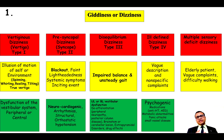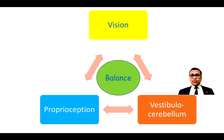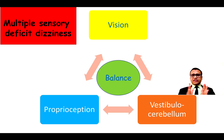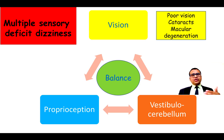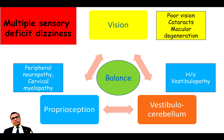Multiple sensory deficit dizziness is specifically seen in elderly patients who have vague complaints, difficulty walking, and multiple concurrent problems. Balance is controlled by three main sensory inputs: vision, proprioception, and vestibular input. In these patients, there may be poor vision due to cataract or macular degeneration, proprioceptive loss due to peripheral neuropathy or cervical myelopathy, and a previous vestibular deficit — all leading to this non-specific type of dizziness in the elderly.